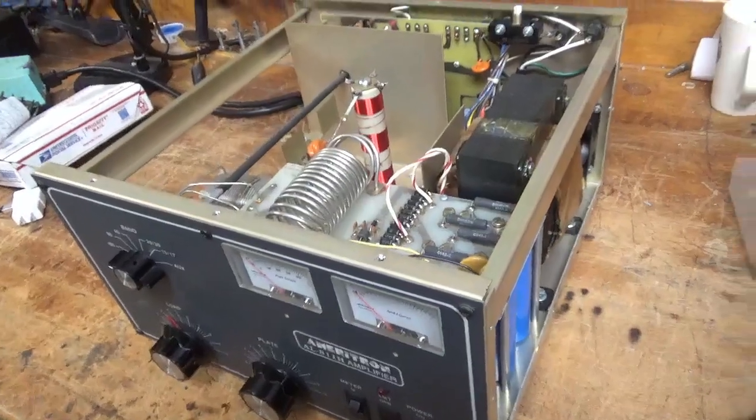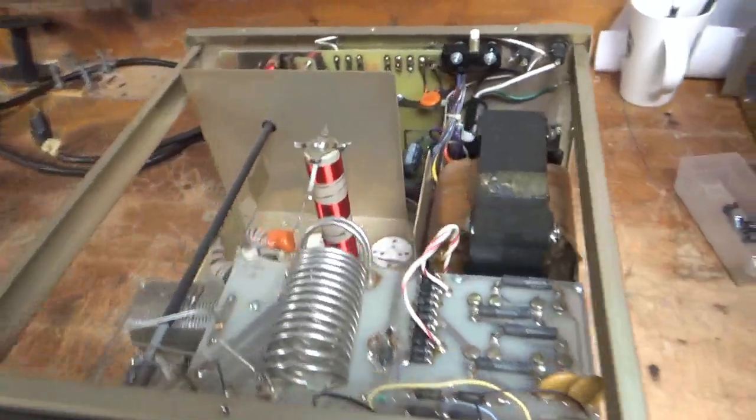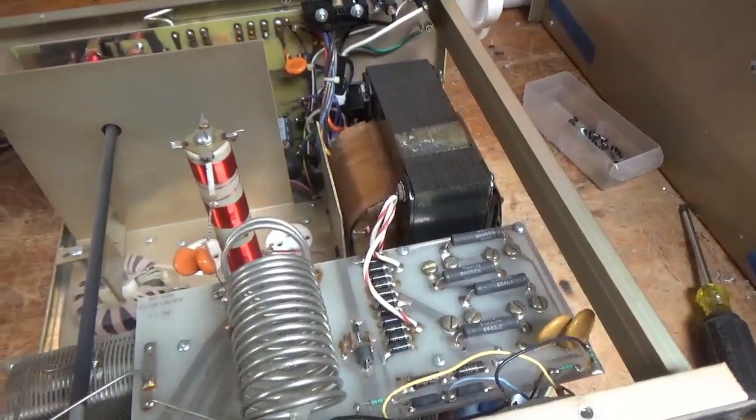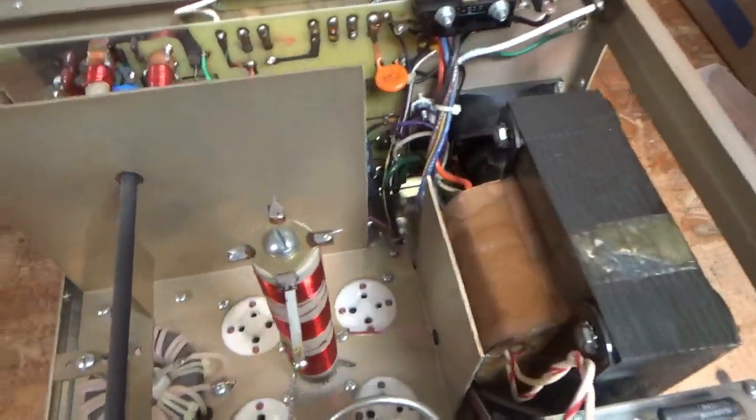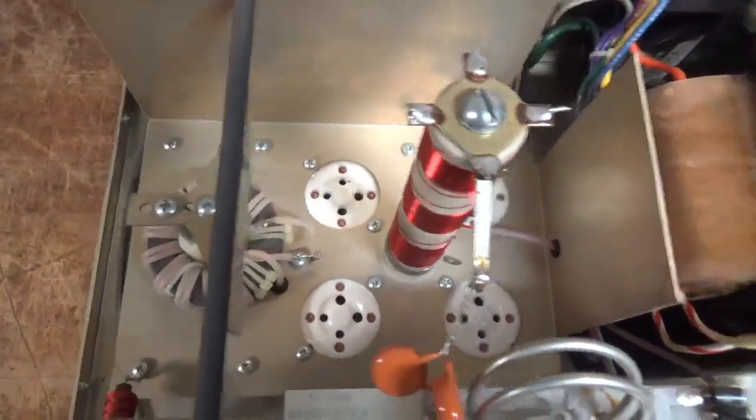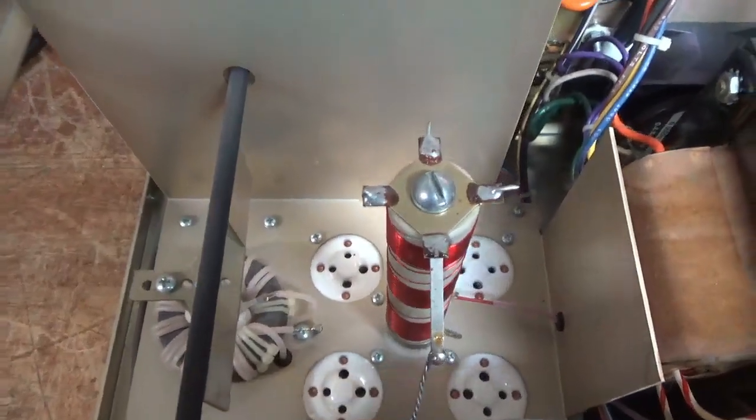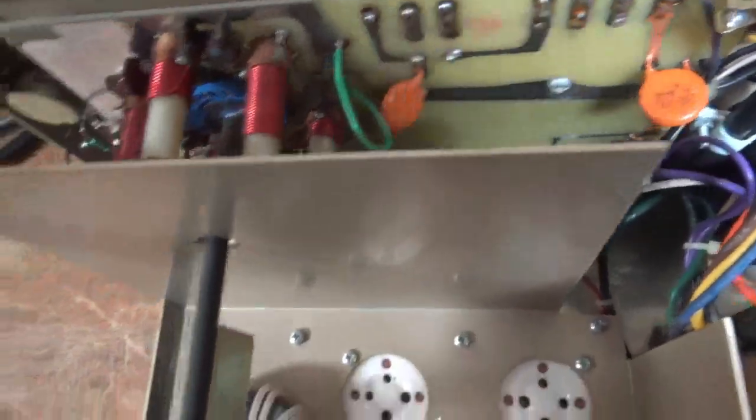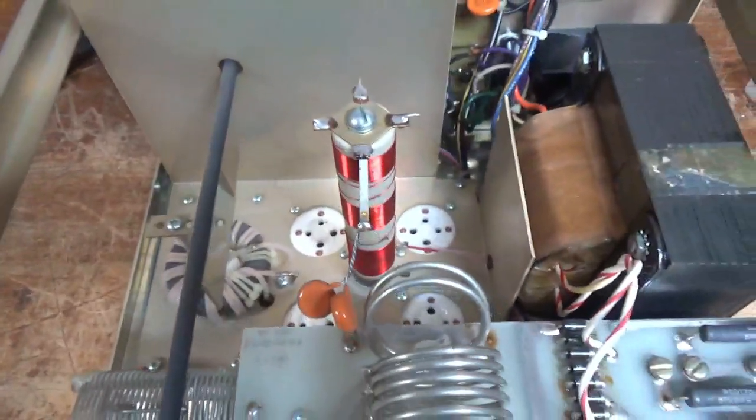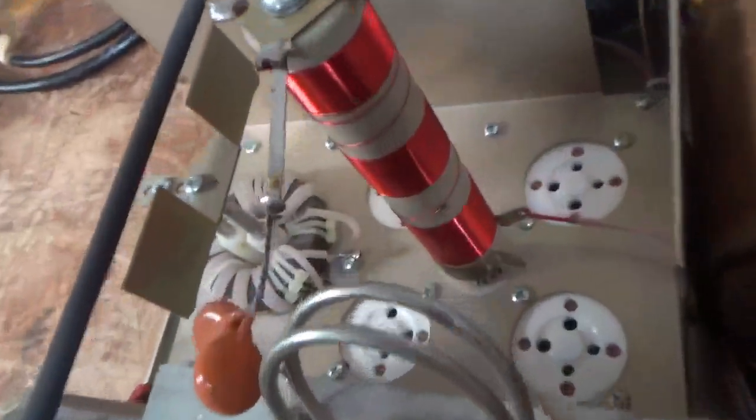So we have an Ameritron AL811H in for repair. It's an older one, so I'm going to do all the mods. Bias mod, gas discharge tubes, pull the sockets, compress the socket clips. Grids are not grounded in this one. I'll ground the grids. I'll add the diodes to the rear board, do the 10 meter mod. Needs a parasitic board, needs a new plate choke.